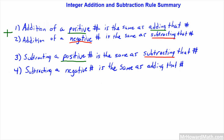Let's do our underlining here — 'subtracting' and 'adding' — and put a big negative sign to mark these as the subtraction rules. Now let's work through some brief examples.